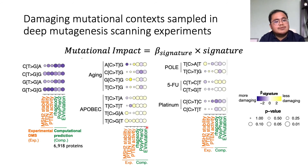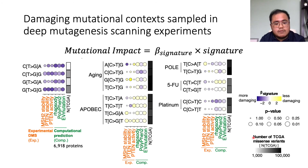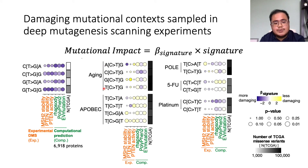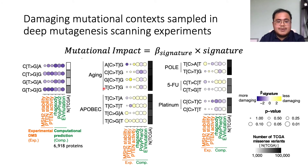We further found that considering the number of TCGA variants observed occurring in each of these motif contexts, the damaging mutation motifs tend to be quite rarely mutated in the observed data, whereas the tumors are peppered with mutations attributable to the common observed mutational signatures.